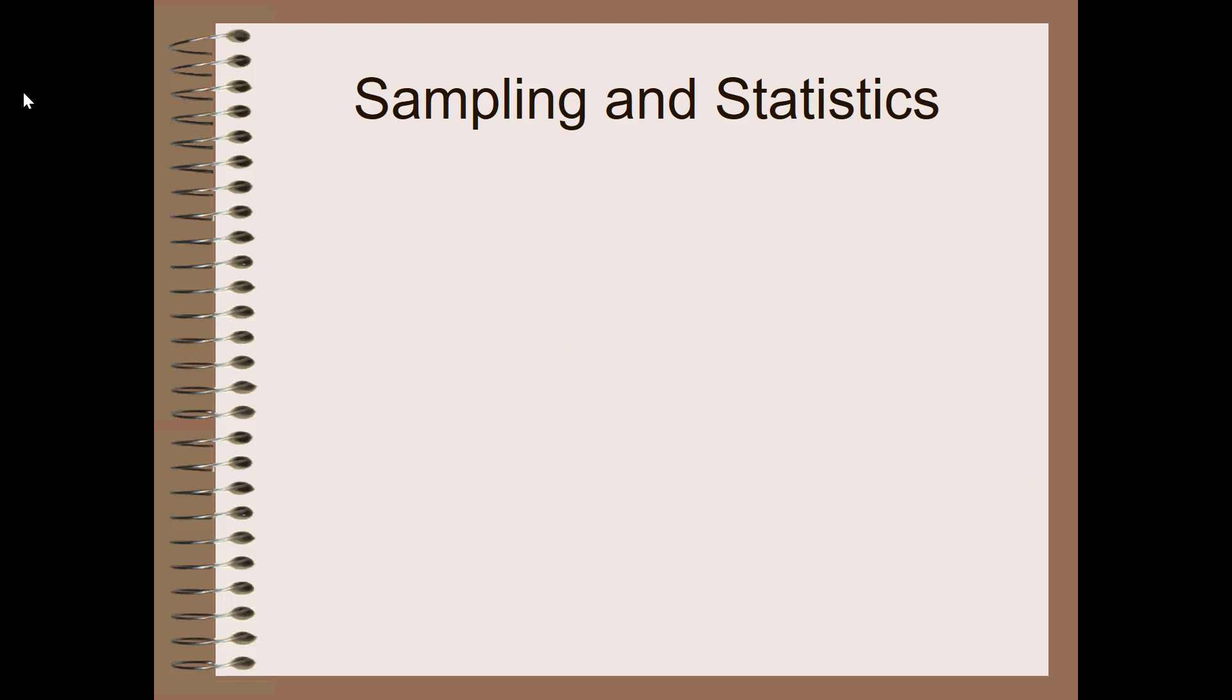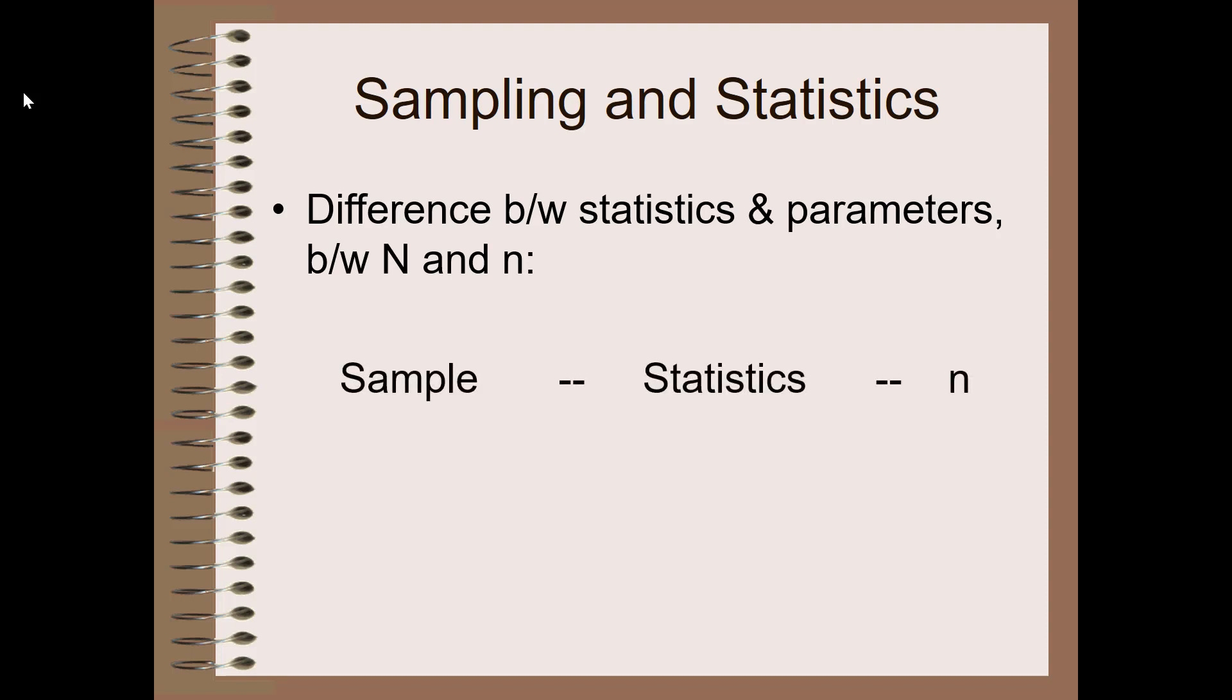Just a quick note on sampling and statistics versus parameters. I want to explicitly go over the difference between statistics and parameters, between big N and little n. Generally speaking, when we're talking about a sample, we use little n and any information produced about that sample is referred to as statistics.